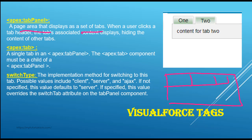Now when a user clicks on a particular tab, the content of that tab will be displayed and it will hide the content of the rest of the tabs. If the user clicks on the second tab, then the contents of that tab will be displayed and it will hide the contents of the other tags.